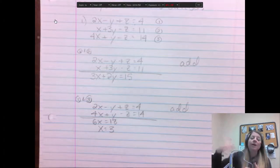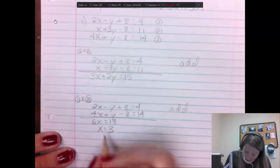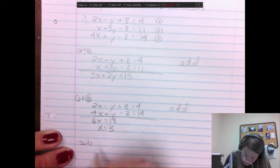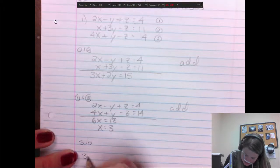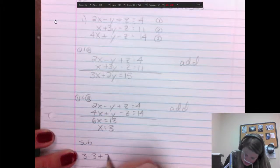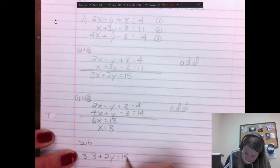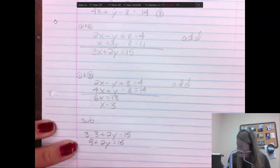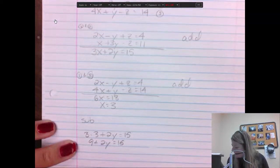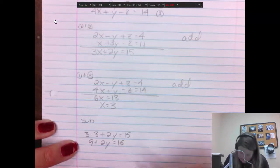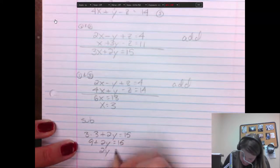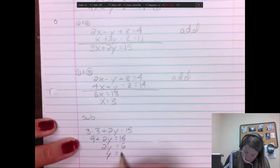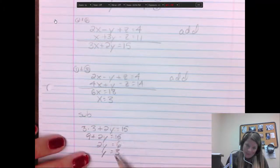So we could plug that x into this equation to find y. Then we take both of those and plug it into any of those and we can find z. So we're almost done. We're to the substitution idea now. So I'm going to plug this one into this one. So this is just substitution. So I'd have 3 times 3 plus 2y equals 15. So 3 times 3 is 9 plus 2y equals 15.